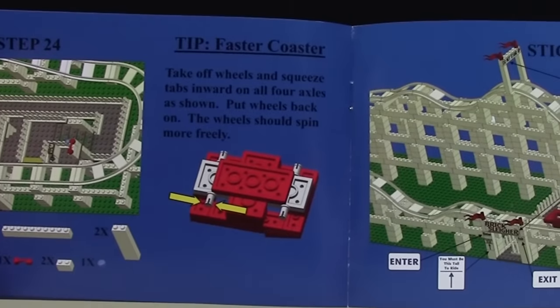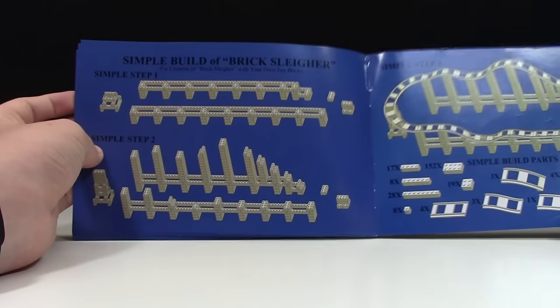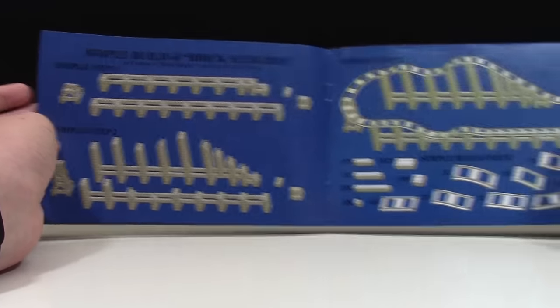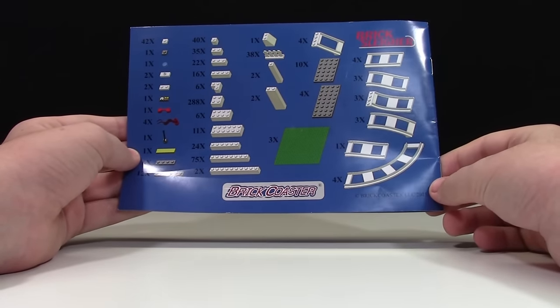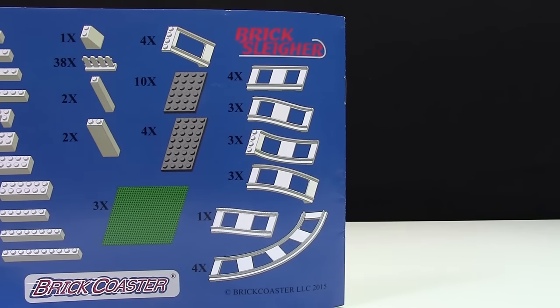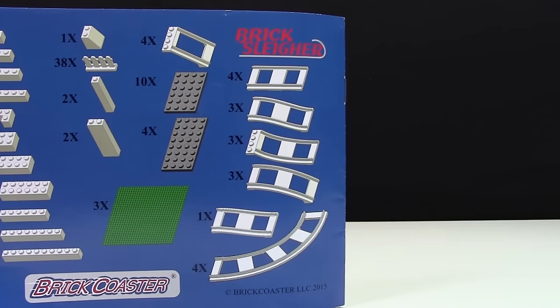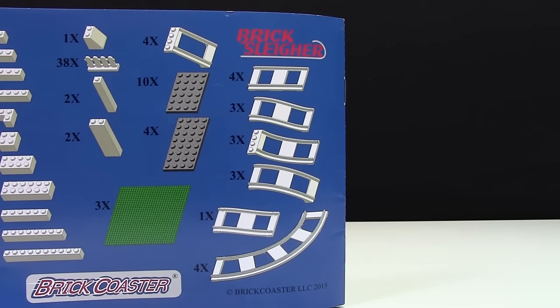It shows you where to apply your stickers as well as the simple build of the Brick Slayer. On the back is a list of parts that Brick Coaster recommends for your Brick Slayer. There's also an overview of all the roller coaster parts that actually come with this set, so you know when you're buying your roller coaster if you need to buy any other parts to make the roller coaster of your dreams.